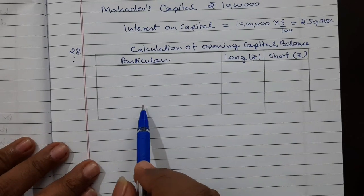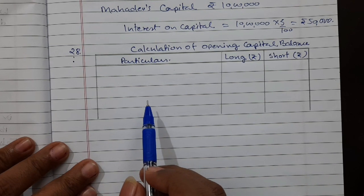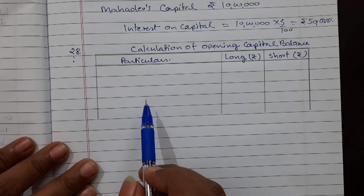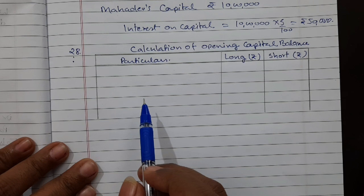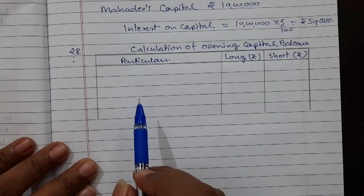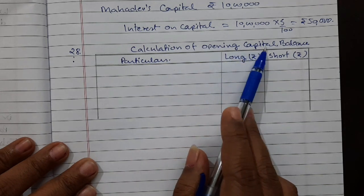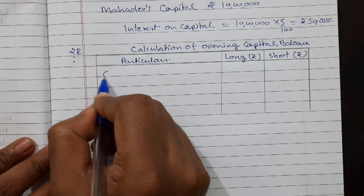In question number 28, a balance sheet is given on 31st March 2020. The two partners are Long and Short. Their capital accounts are given in the balance sheet, meaning that is the closing capital. The question asks to calculate interest on capital at the rate of 8% per annum. During the year, Long withdrew rupees 40,000 and Short withdrew rupees 50,000. Profit for the year was rupees 1 lakh 50,000, out of which 1 lakh was transferred to general reserve, which is shown in the balance sheet. We will need to calculate the opening capital balance to compute interest on capital.